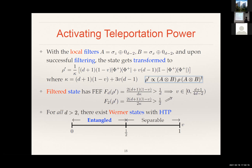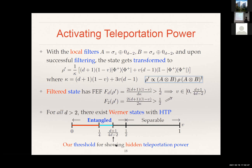Putting everything together on the number line: for all dimensions d greater than two, the entangled Werner states in this red region were initially useless, but their teleportation power can be activated. Worth noting is that this critical value decreases with d, but even in the limit of d going to infinity it doesn't go all the way to zero — it stays at a quarter. This means that in all dimensions, there is always a finite interval of Werner states that were initially useless but whose teleportation power can be activated.